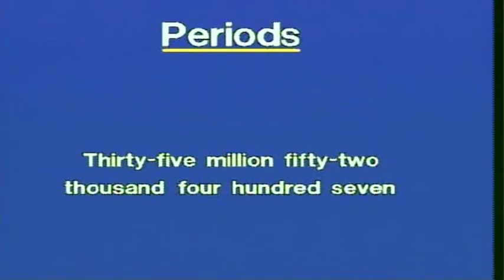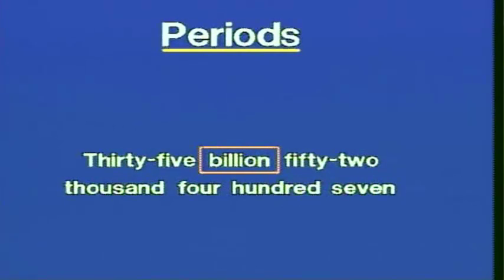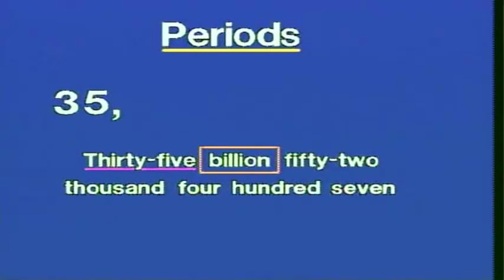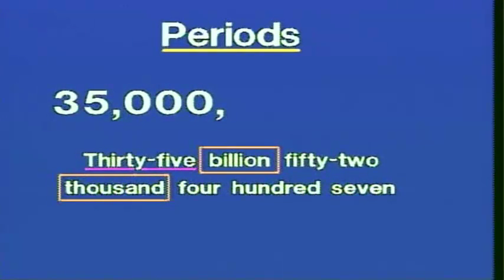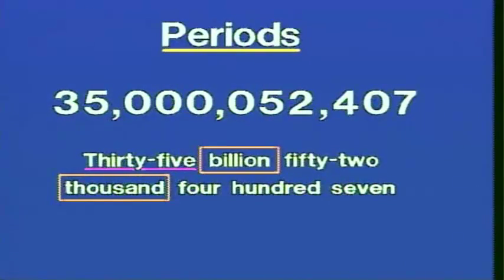Now suppose we change the number slightly: instead of million, suppose this word is billion. We identify the billions period and write 35 in it. We know we need a millions period, thousands period, and ones period to follow. But as we look at the number in written form, the next period named is thousands — we've completely skipped over the millions. Since no millions are mentioned, we write zeros as placeholders for all digits in the millions period. Then we write 052 in the thousands period and 407 in the ones period.